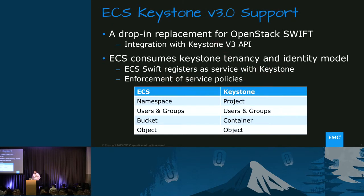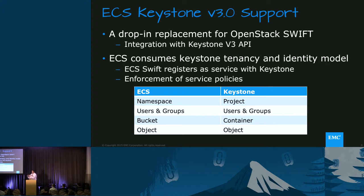ECS is becoming really a drop-in replacement for OpenStack Swift. If you have OpenStack today, you can bring it in and have reliable object storage. We integrate with the latest Keystone API, v3. The way we do the mapping is: Keystone has projects and ECS has something called a namespace — very similar, where you've segregated access across a namespace. You give the customer the namespace and they go ahead and use it. Users and groups map to both, and we mapped our buckets to containers, with the same object underneath.